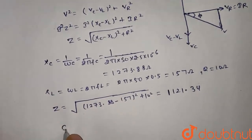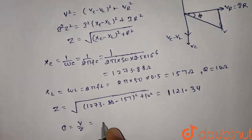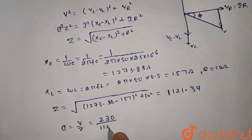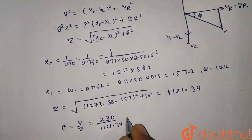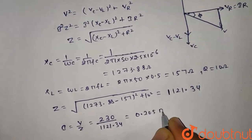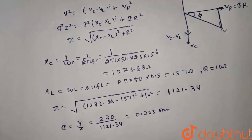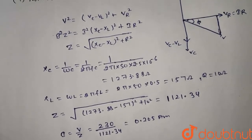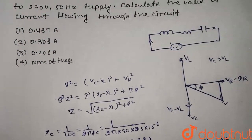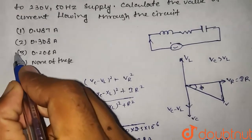Now we find the current. I is equal to V by Z, so 230 divided by 1121.34, which gives 0.205 ampere. This is near option 3, which is 0.206. This is the answer.